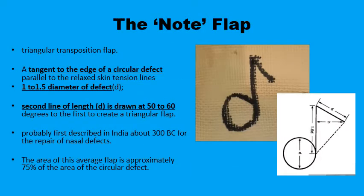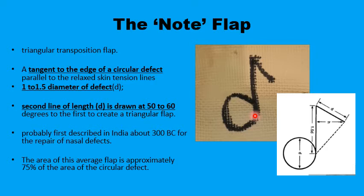The design of the note flap is fairly simple. Starting with a circular defect, you draw a line tangential to the circle, choosing the line to lie parallel to a relaxed skin tension line or a certain anatomical landmark. This tangent extends to a length of one to one-and-a-half diameters of the defect. From the end of this line, you draw another line at an angle just less than 60 degrees — say 50 to 60 degrees — and that second line should have the length of the diameter of the defect.